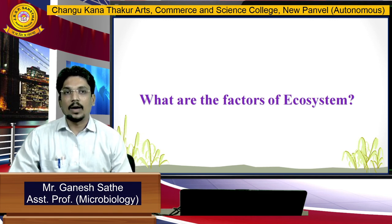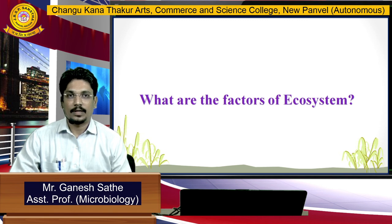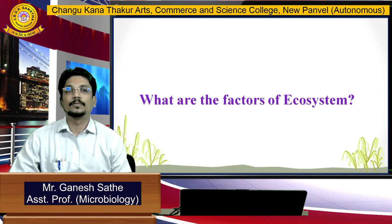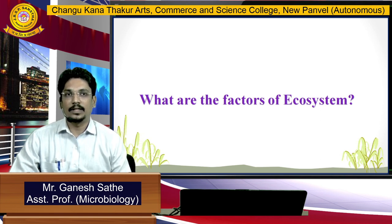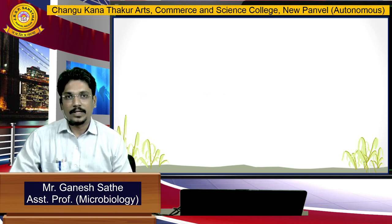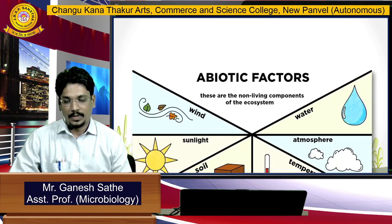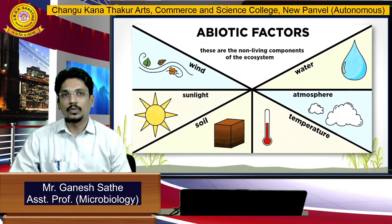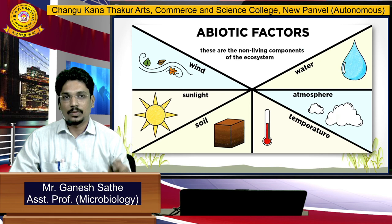An ecosystem has two main factors. First one is the abiotic factor and the second one is the biotic factor. Now I will explain abiotic factors. Abiotic factors include water, atmosphere, temperature, soil, sunlight, and wind.